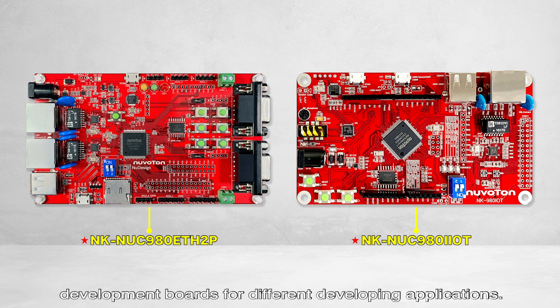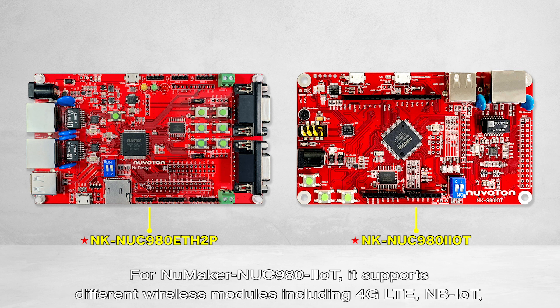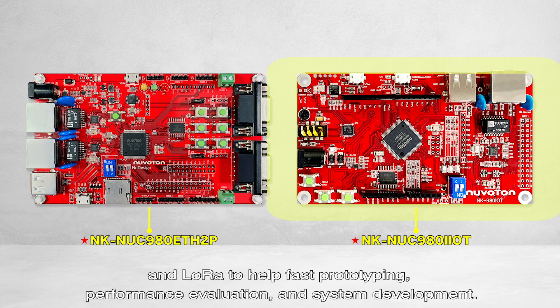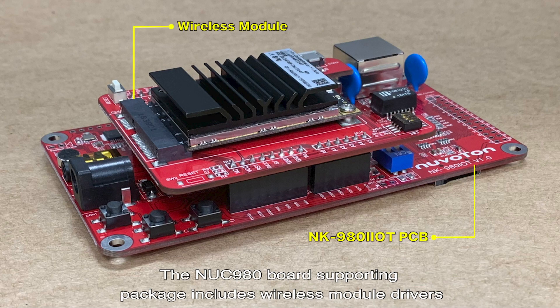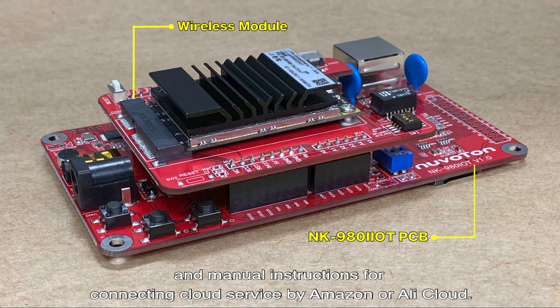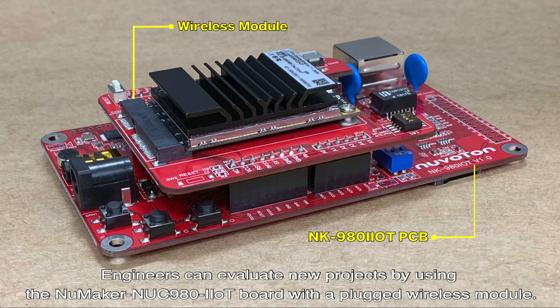Nuvoton provides the NUMAKER NUC980 Industrial IoT board and the NUMAKER NUC980 serial server developer board for different applications. The NUMAKER NUC980 Industrial IoT board supports different wireless modules including 4G LTE, NB-IoT, and LoRa to help with fast prototyping, performance evaluation, and system development. The board supporting package includes wireless module drivers and manual instructions for connecting to cloud services via Amazon or Alibaba Cloud.